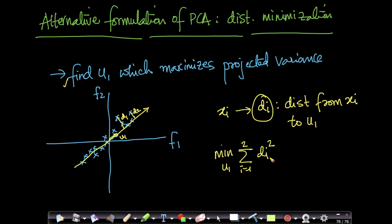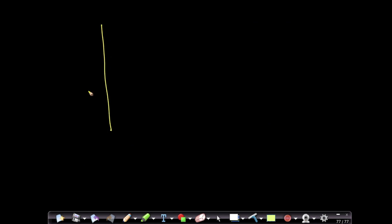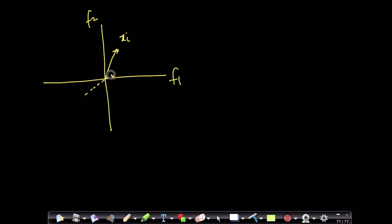This is called the distance minimization formulation of PCA because we are trying to find U1 such that if I take all the distances from each of my points, all these distance squares — this distance squared, this distance squared, and so on — and sum up all of them, I want to minimize these distances. Let us understand these distances in more detail. Let us assume these are my two axes, f1 and f2. Let us assume I have one point here, let us call that point Xi, and this is my direction U1.